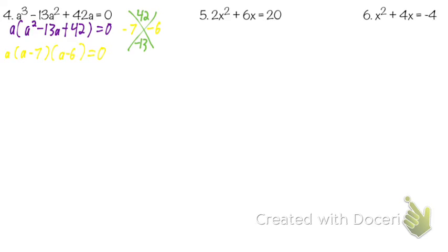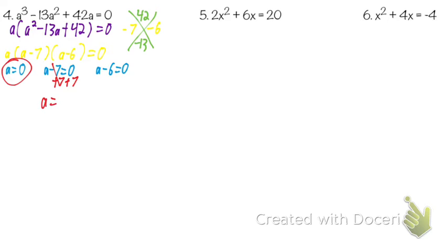Now do we have multiplication that equals zero? Yes — and how many things do we have multiplying? Three. So how many equations are we going to set up? Three. The first equation: A equals zero — that one's already done. The next equation: A minus 7 equals zero, so A equals 7 — add 7. The last equation: A minus 6 equals zero, so A equals 6 — add 6.